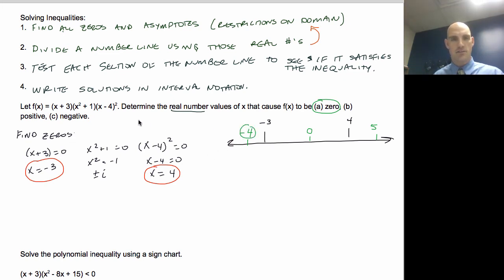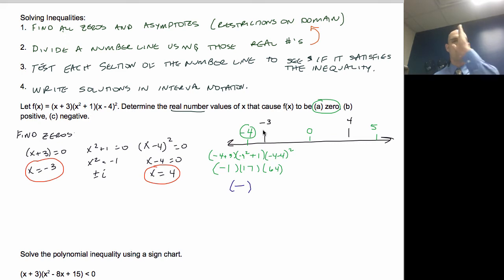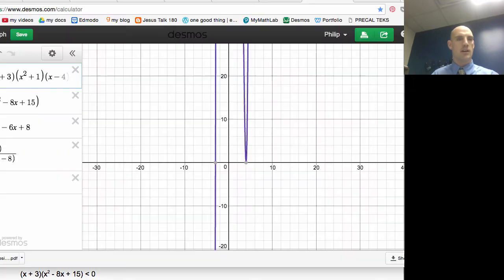This is the process of testing those intervals — what it looks like without a calculator. I'm going to take x = −4 and put it into my original function: (−4 + 3)(−4² + 1)(−4 − 4)² = (−1)(17)(64). I don't need to know the exact number, just whether it's positive or negative. The result is negative.